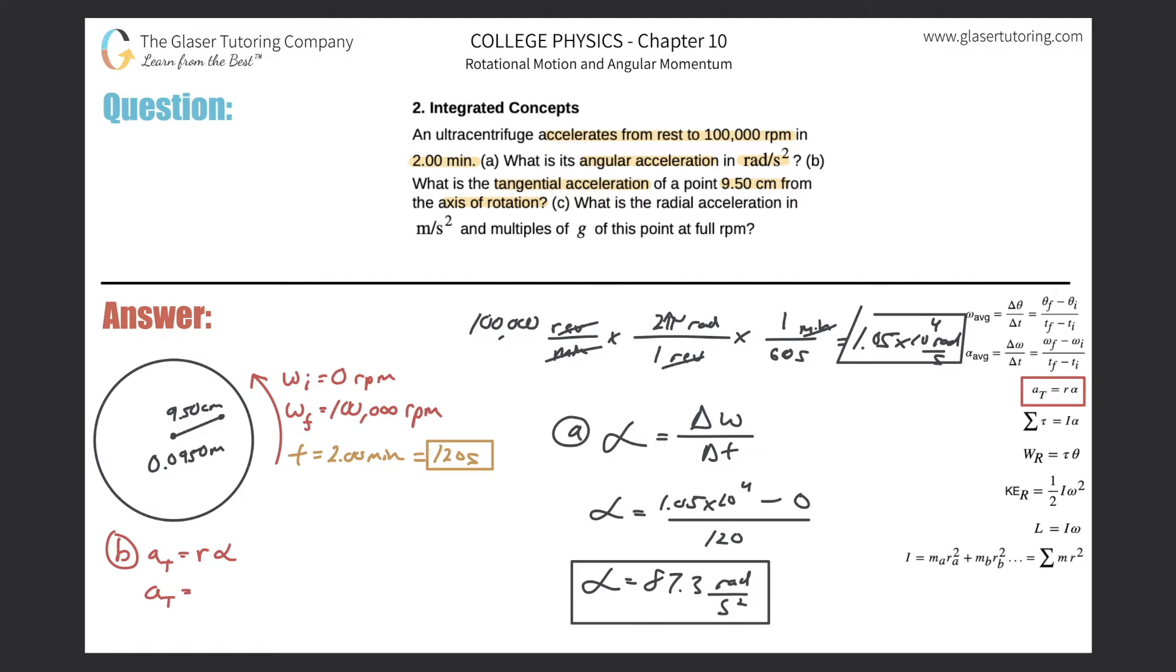So here, a_T will be equal to the radius. Now the radius - another term would be the distance from the axis of rotation to the point of interest. You can substitute that terminology if you like. So the distance that's important in this problem will be 0.0950 multiplied by my value that I obtained before, which was 87.3. So a_T will be equal to 0.095 times 87.3.